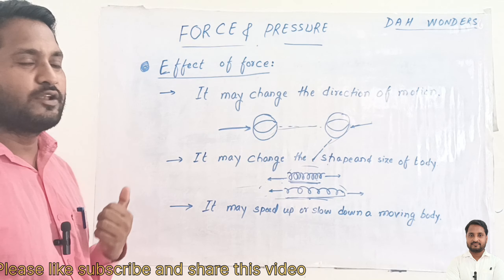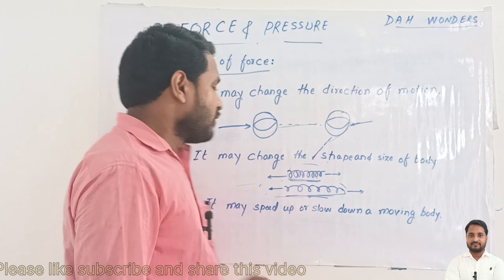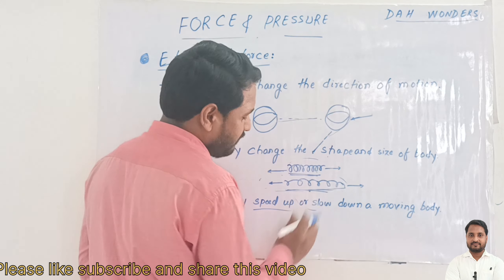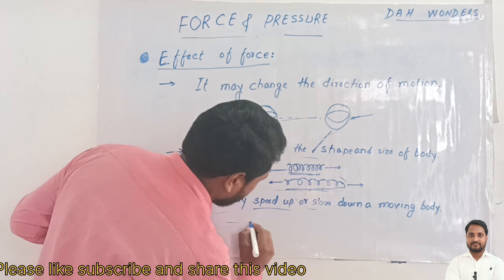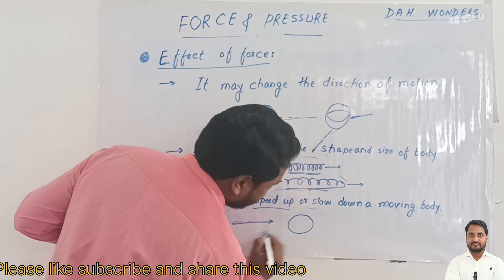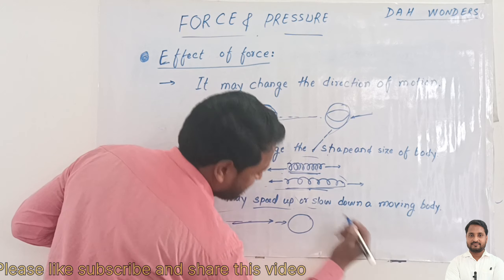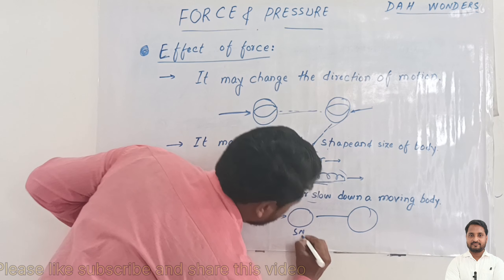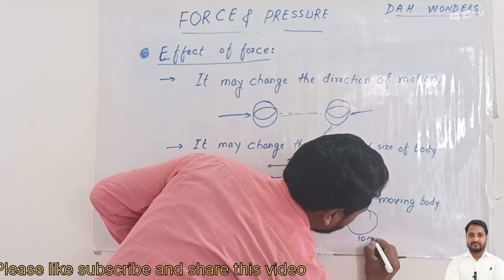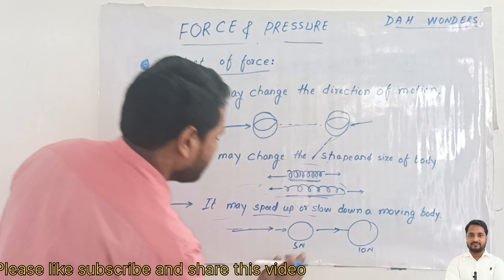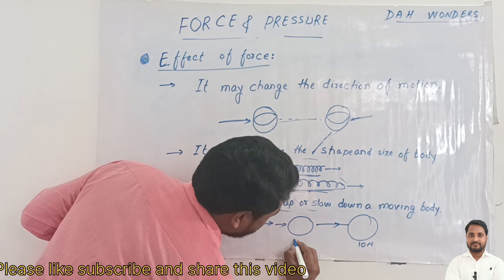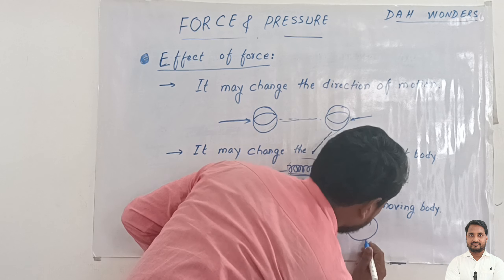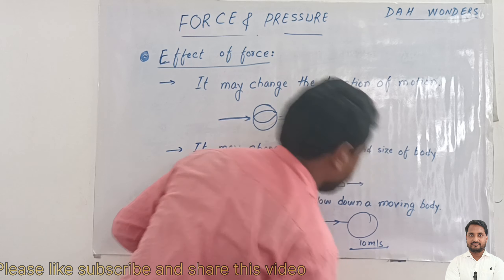Another effect: force may speed up or slow down a moving body. For example, we can apply brakes on a moving object and the speed slows down. Conversely, applying force in the same direction as a wheel's motion speeds it up. If the initial speed is 5 meters per second and we apply force, the speed can increase to 10 meters per second.